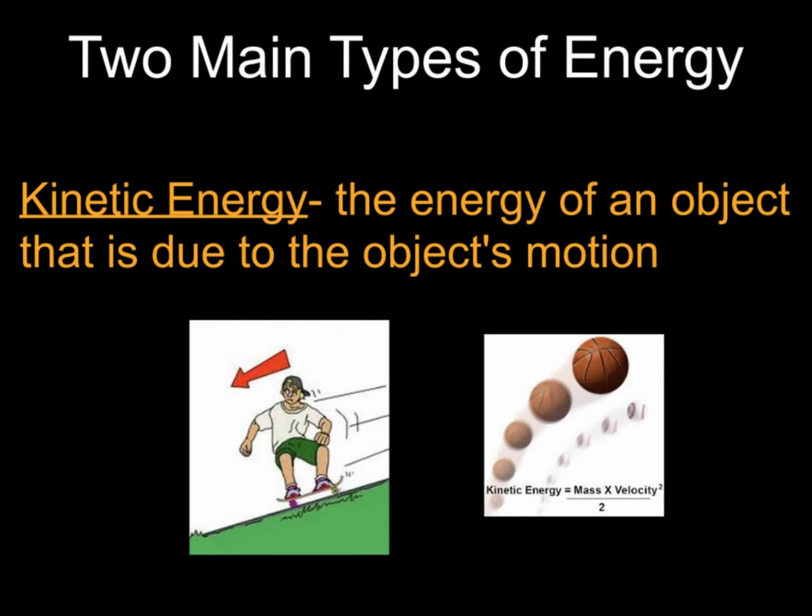The second category is kinetic energy, or the energy of an object that is due to the object's motion. Like the picture — the guy scooting down the hill on a skateboard, the basketball flying through the air, my mouth moving and sound flying out into the speaker. All of these things are moving energy, so they are kinetic energy.